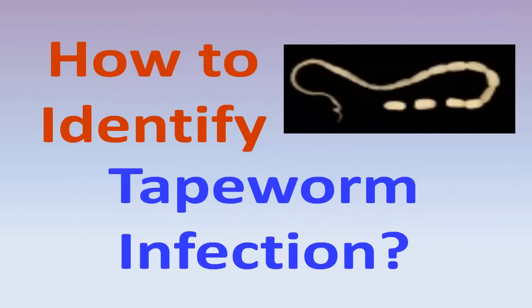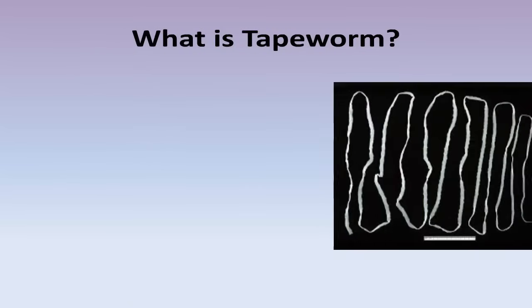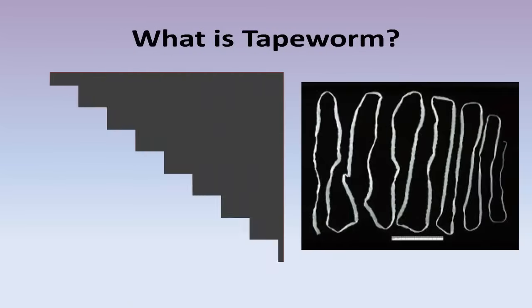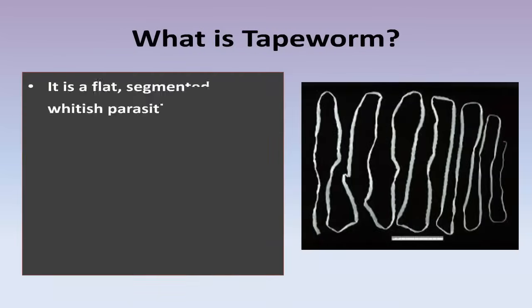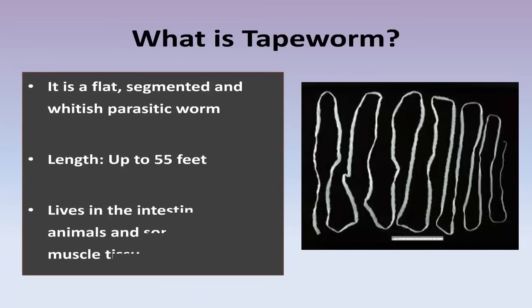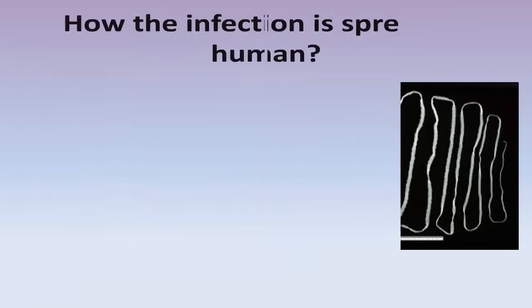How to identify tapeworm infection. What is a tapeworm? It is a flat, segmented, and vitiate parasitic worm having a length up to 55 feet. It lives in the intestine of some animals and sometimes in muscle tissues.